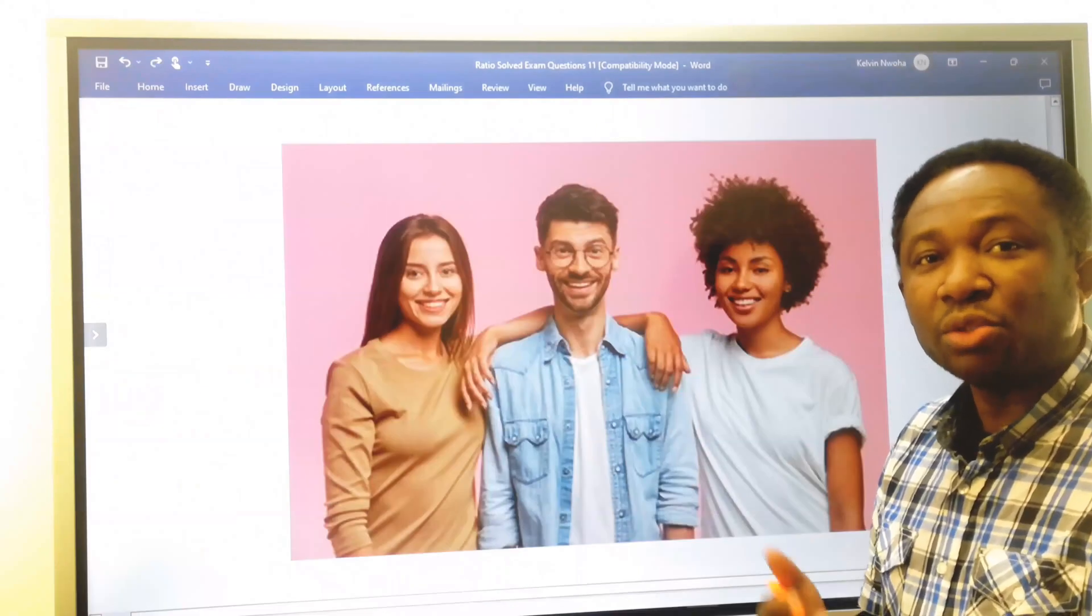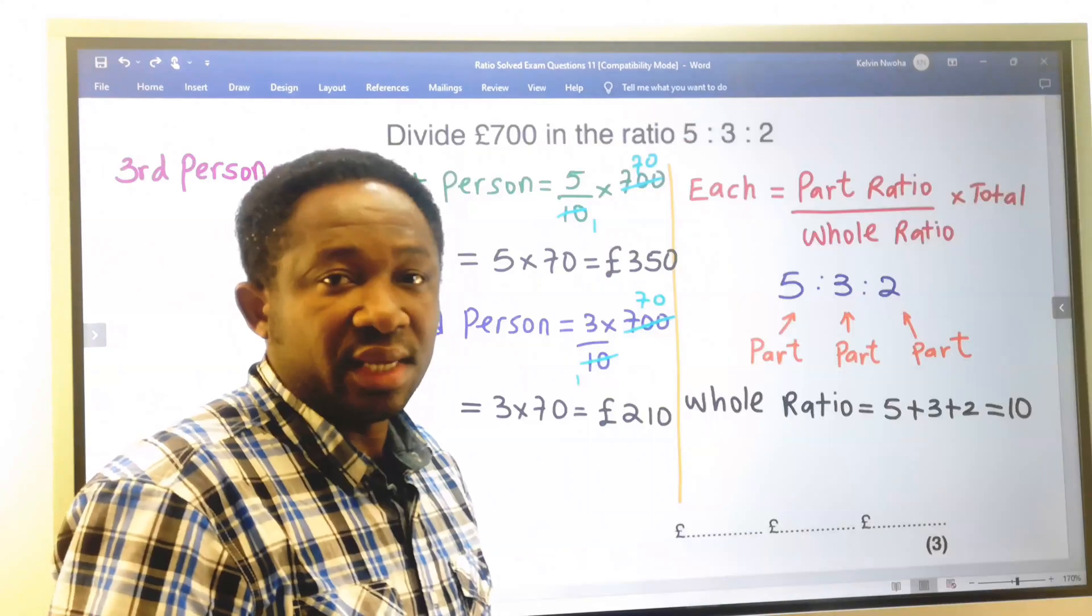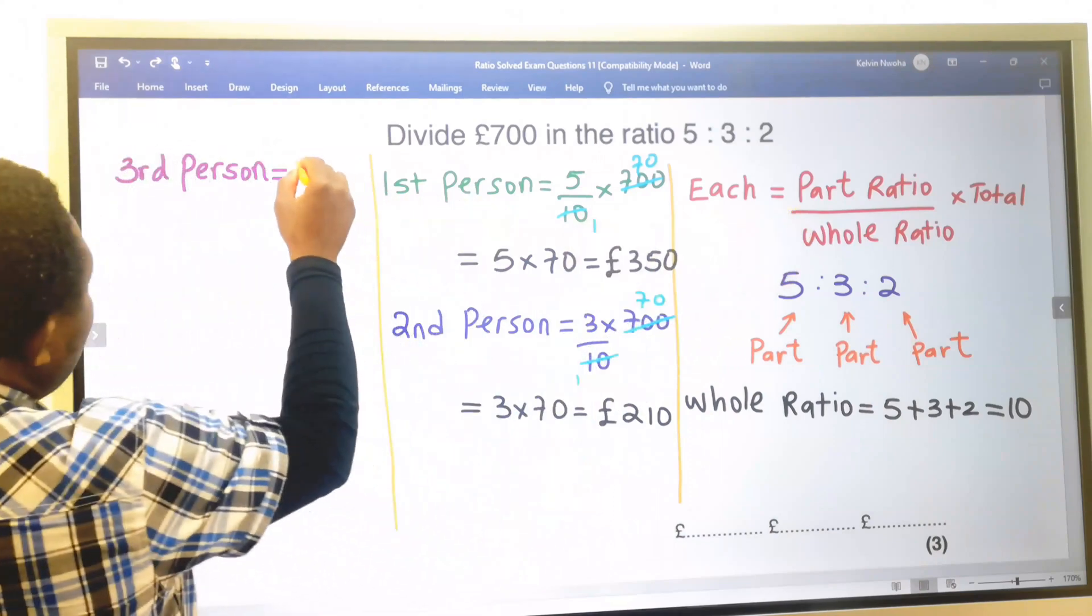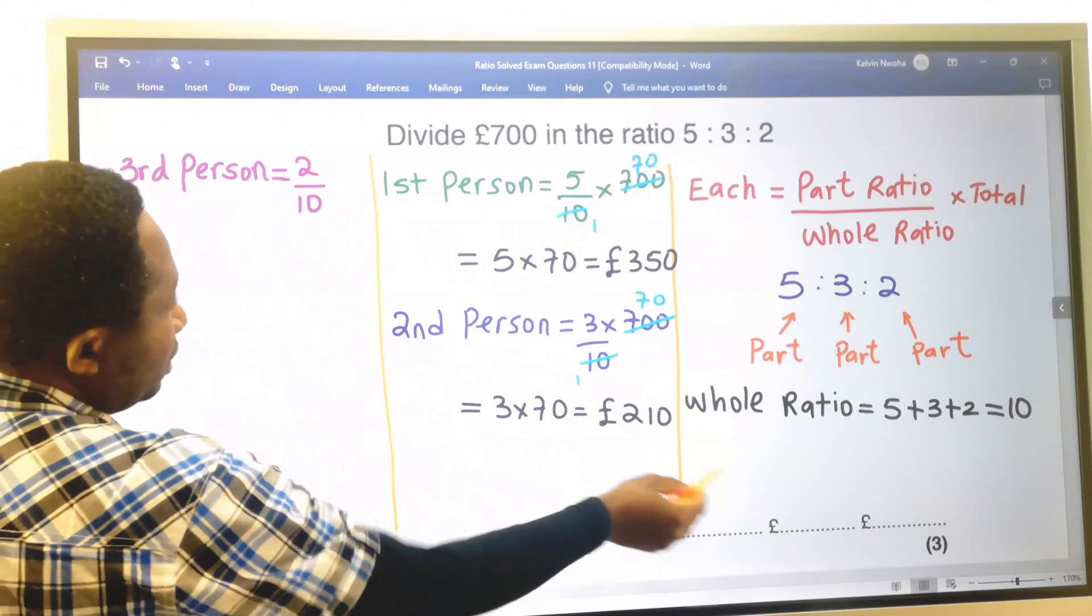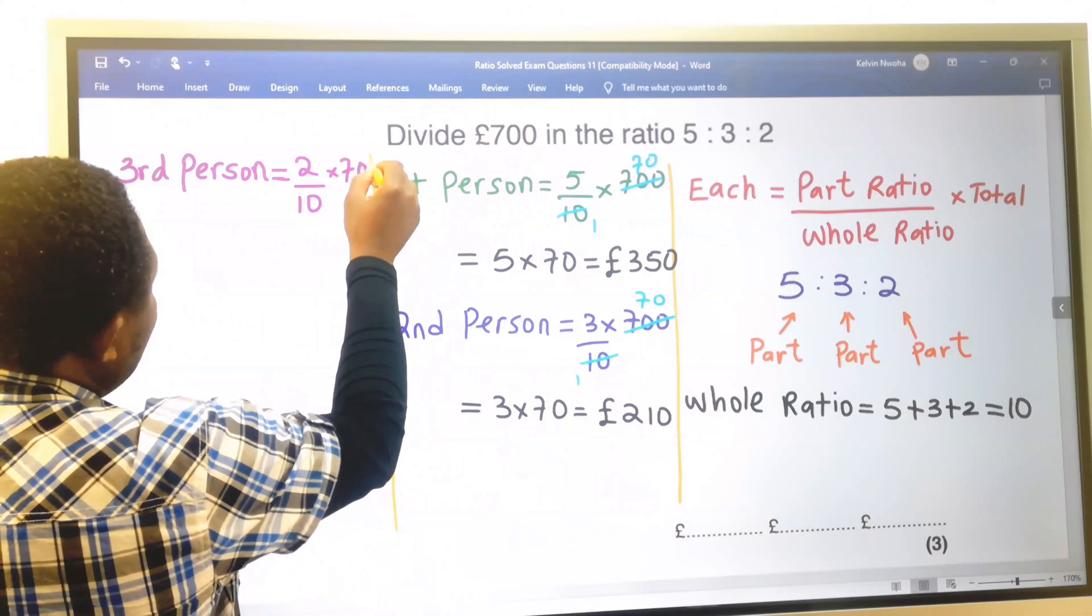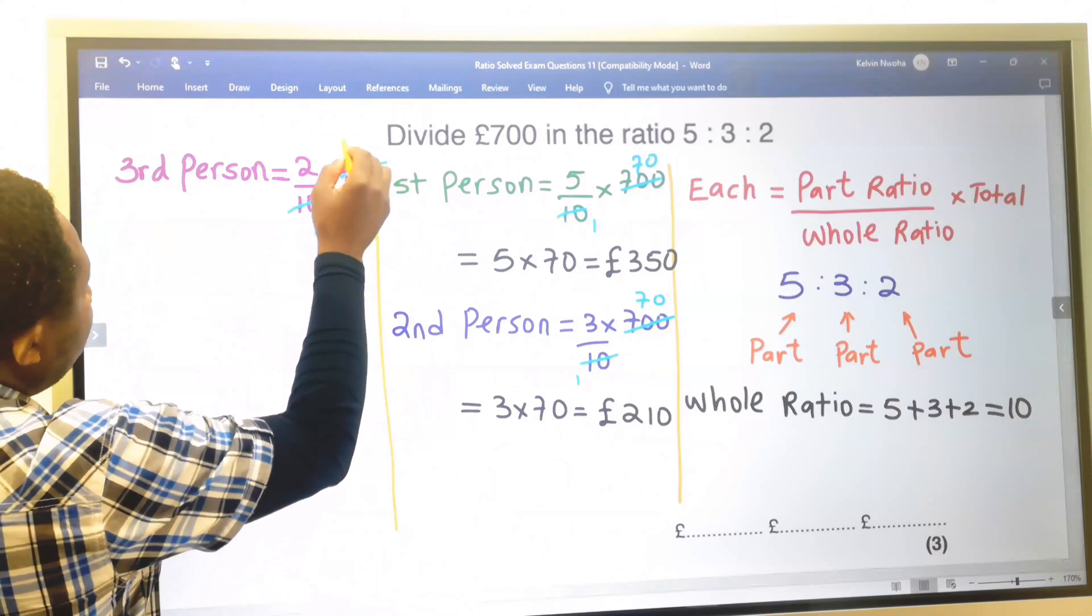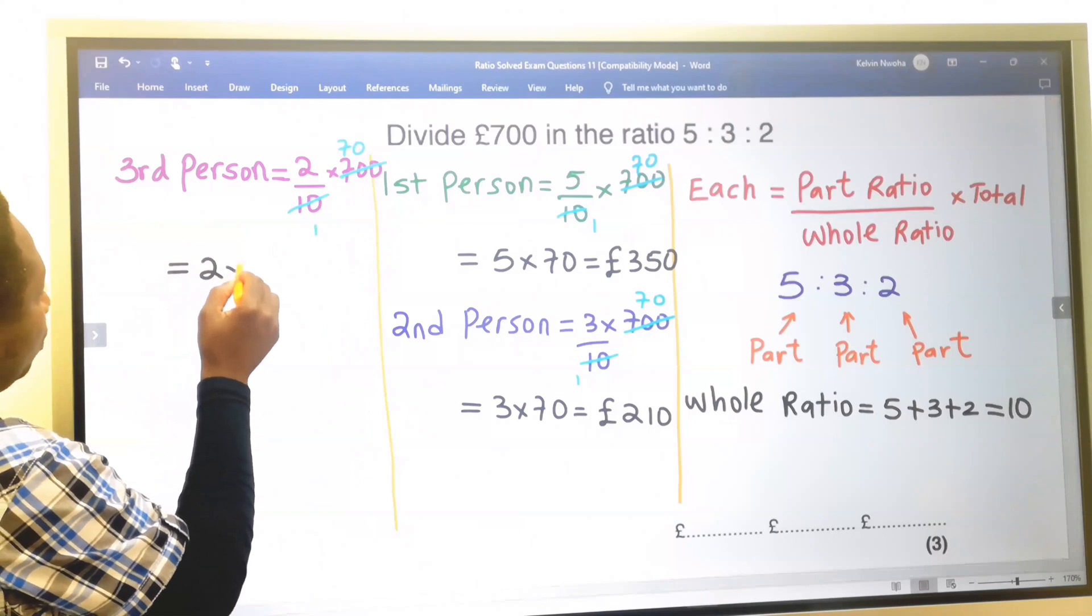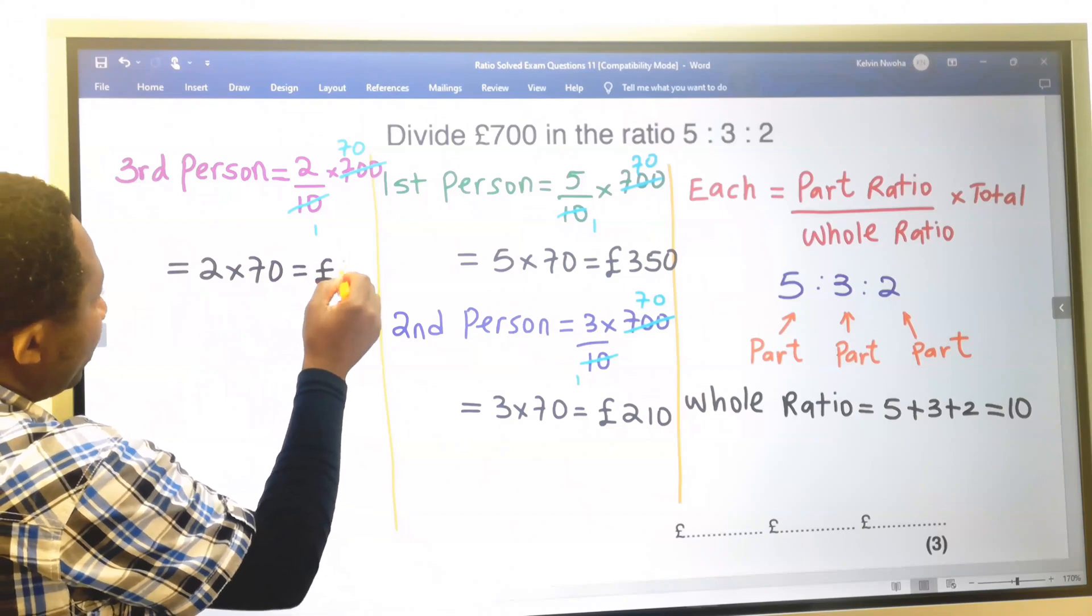We are going to calculate how much the third person will get. The third person will get, in this formula, 2 divided by 10, which is the whole ratio, times the amount being divided, which is 700. 10 here is 1 and 10 here is 70. The third person will receive 2 times 70, which is 140 pounds.